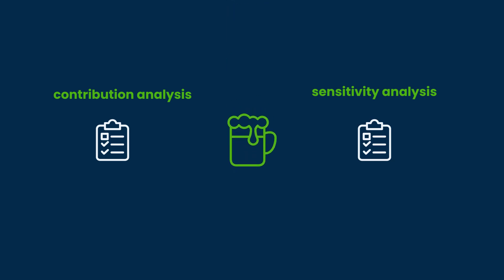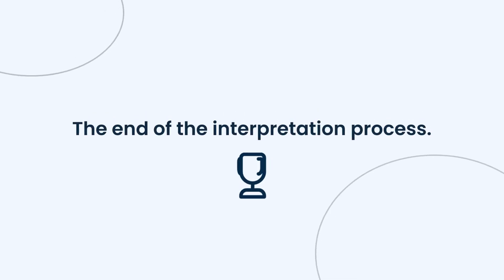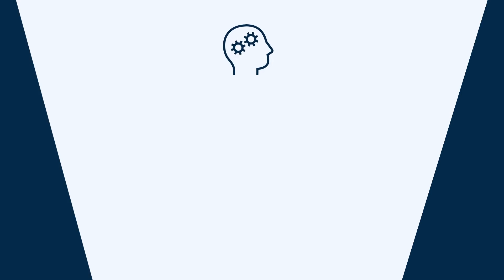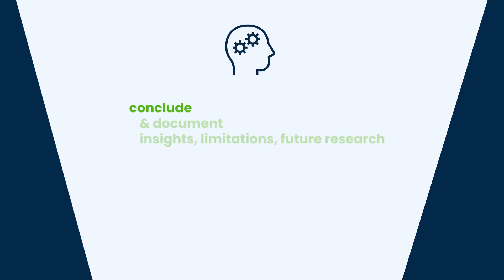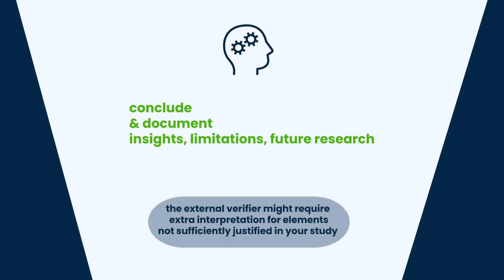Going back to our beer production example: apart from producing beer, producers are also continuously looking for ways to improve the beer and the production processes. After critically assessing your LCA results and study, it's time to conclude on your study and document the obtained insights, limitations, and interesting suggestions for future research. This marks the end of the interpretation phase. However, if your LCA is being verified, the external verifier might require extra interpretation for elements not sufficiently justified in your study.